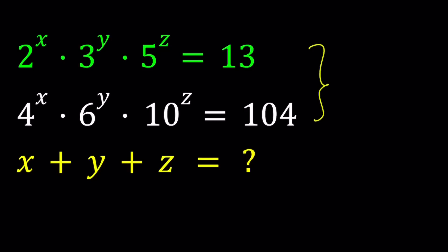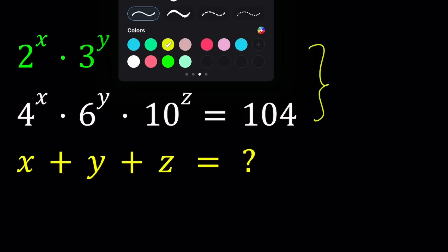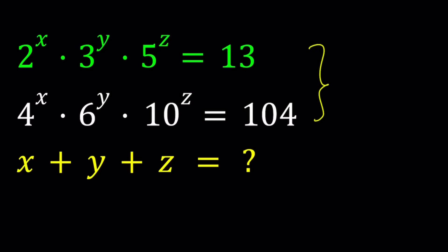Great. So let's go ahead and explore a little bit. But like I said earlier, we can go ahead and replace x with 0. And if you do that, just for fun, you're going to get 3 to the y, 5 to the z equals 13. And then 6 to the y, 10 to the z equals 104.